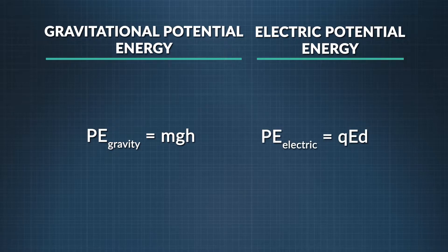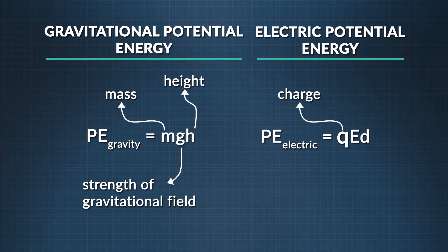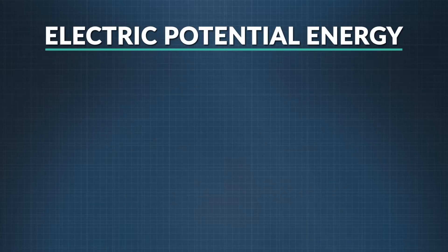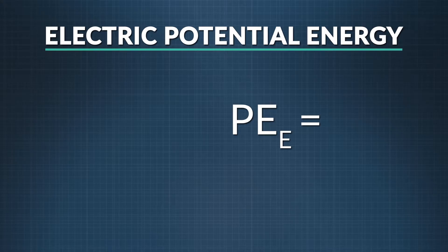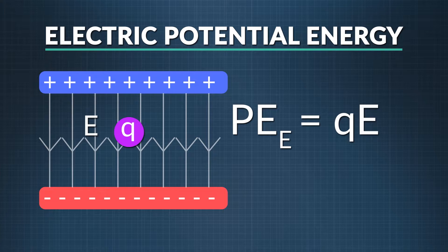Both depend on the position of an object in a field, and both can be positive or negative. To understand the equation for electric potential energy stored by a charge between two charged plates, let's compare it to gravitational potential energy. The potential energy due to gravity equals mass times gravitational field strength times height. The electrical equivalent of mass is charge Q; where G represents gravitational field strength, we replace it with electric field E; and height above ground becomes distance above the bottom plate. So the equation for electric potential energy stored by a charge between two charged plates is Q times E times d, the distance the charge has moved within the field.